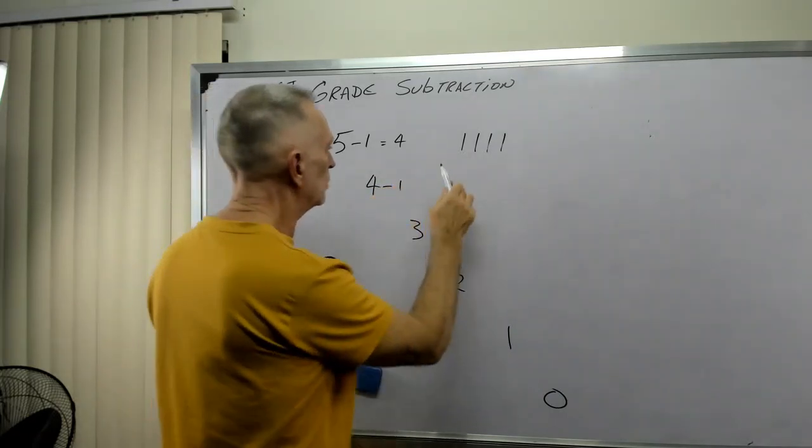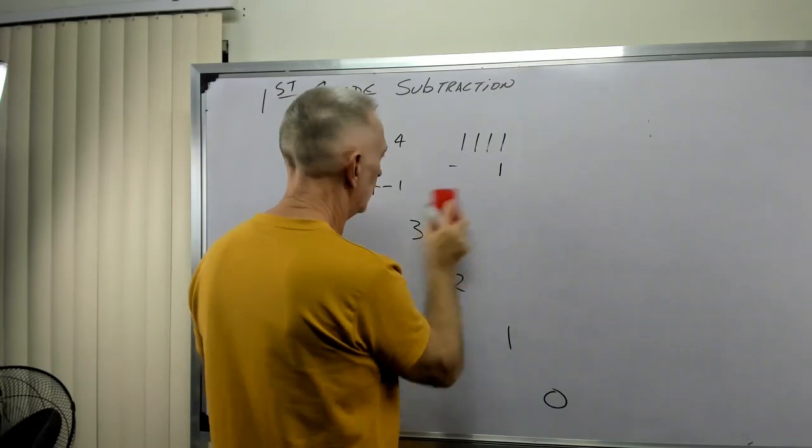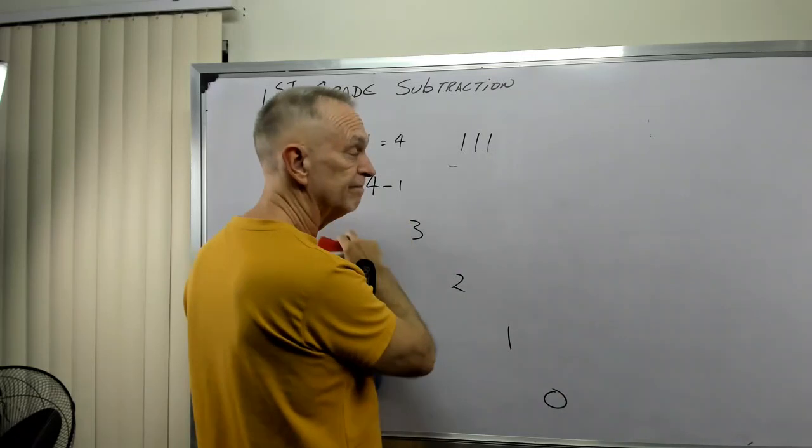Four minus one. So now we have four minus one. Well, this one cancels that one. So I have one, two, three. Whoa.